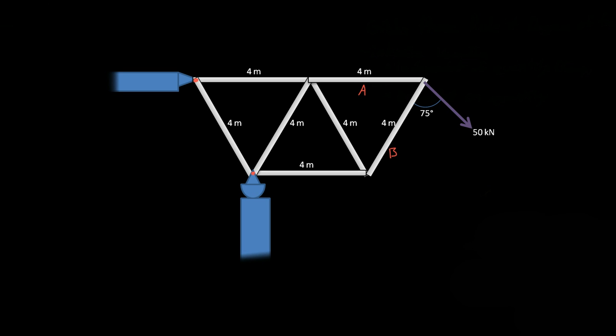All right, this is a video over trusses, and what I want to focus in on, instead of this point and this point, is the two beams - beam A and beam B. So what forces do they feel due to this 50 kilonewtons being applied at a 75 degree angle of beam B?